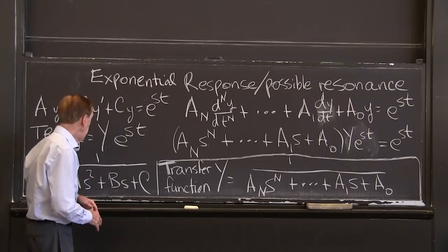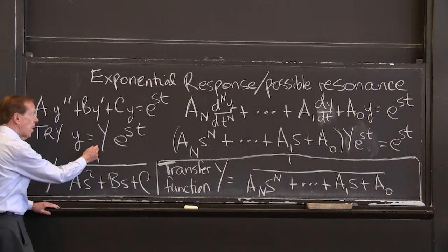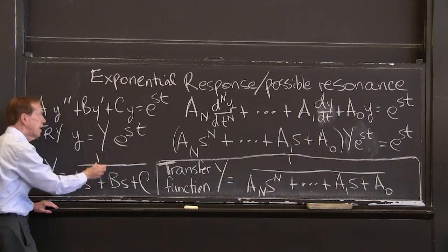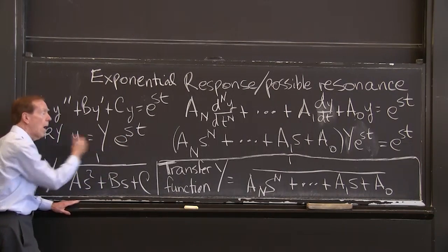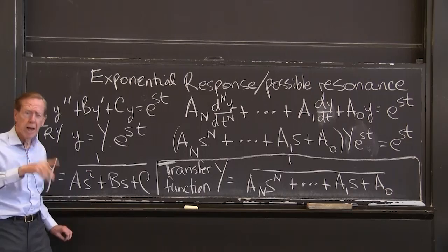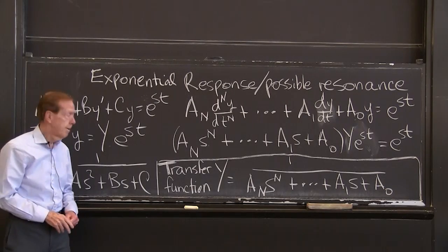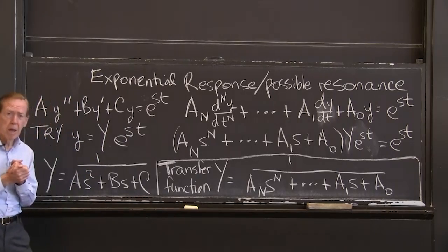And I get y equal 1 over that key polynomial. It's an nth degree polynomial. And the 1 over it is called the transfer function. And that transfer function transfers the input, e to the st, to the output, y e to the st. It gives the exponential response. Very nice formula. Couldn't be better.